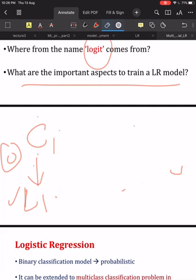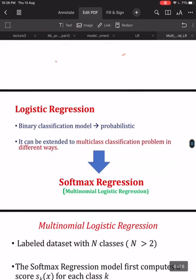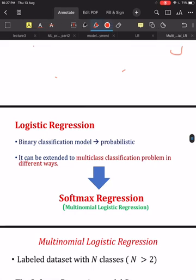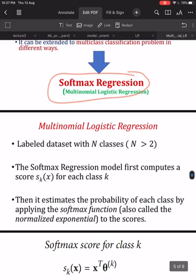In logistic regression we can also use the multinomial regression approach, also called softmax regression. Softmax regression, or multinomial logistic regression, is used to extend logistic regression to support multiple classes. Suppose you have a labeled dataset with n classes where n is greater than 2.